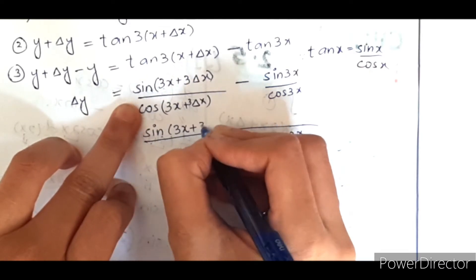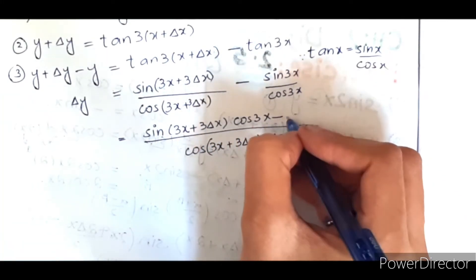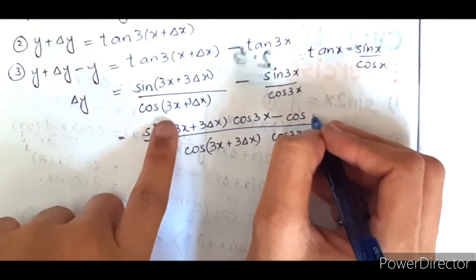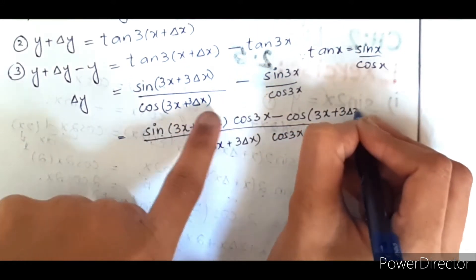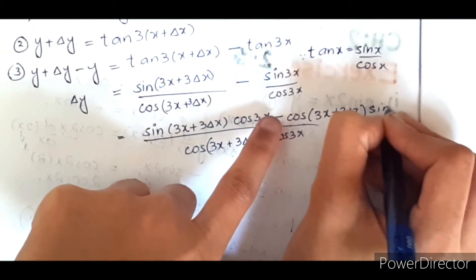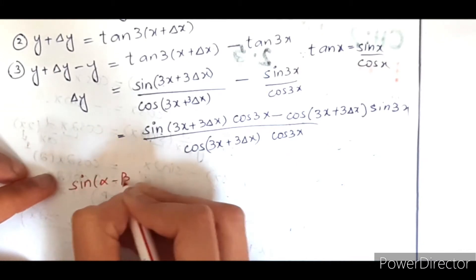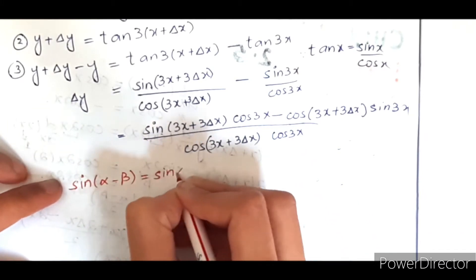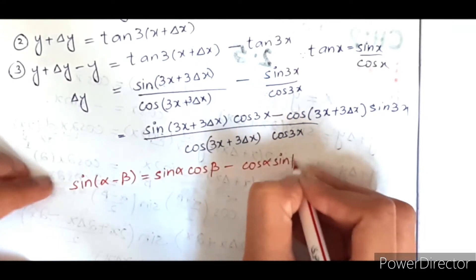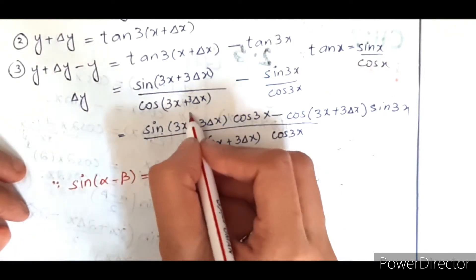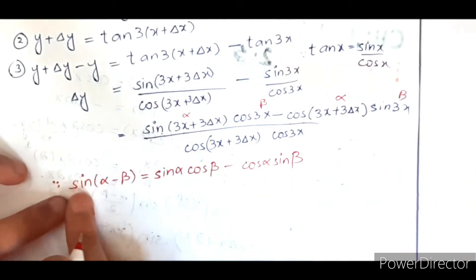This term will multiply by this term. Then we have sine 3x plus 3 del x cos 3x minus - we are going to write cos first because we need to complete the formula - cos 3x plus 3 del x sin 3x. So we have this formula.